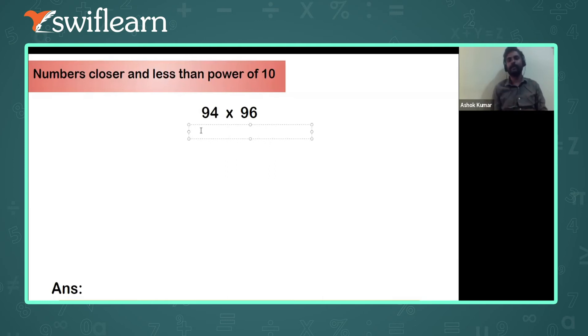So the simplest steps I'll tell you: 94 minus 100 will be how much? Can you tell me? It will be minus 6. Is it correct? That means I will show you here, it will be in brackets, it will be actually 94 minus 100.